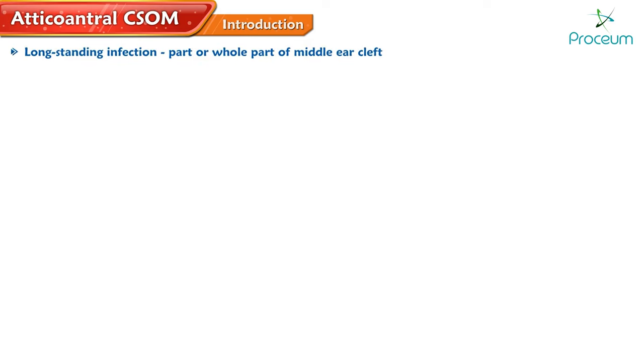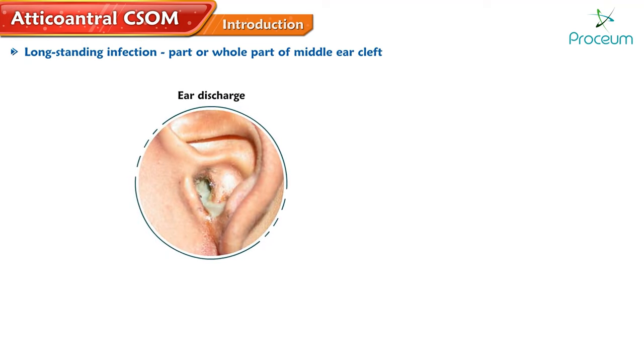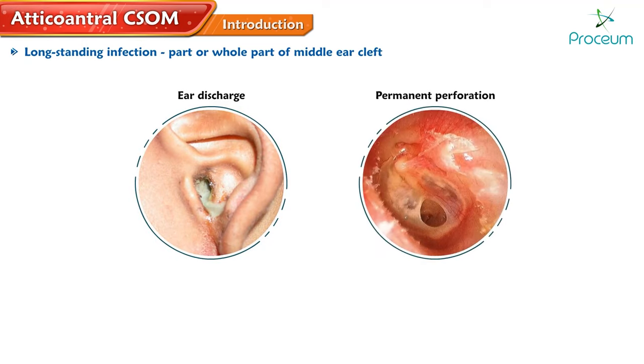Aditus-antral CSOM — Introduction. Chronic suppurative otitis media is a long-standing infection of a part or whole of the middle ear cleft, which is characterized by ear discharge and a permanent perforation.